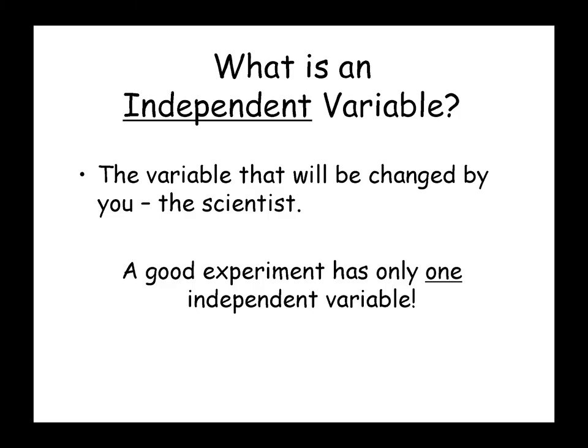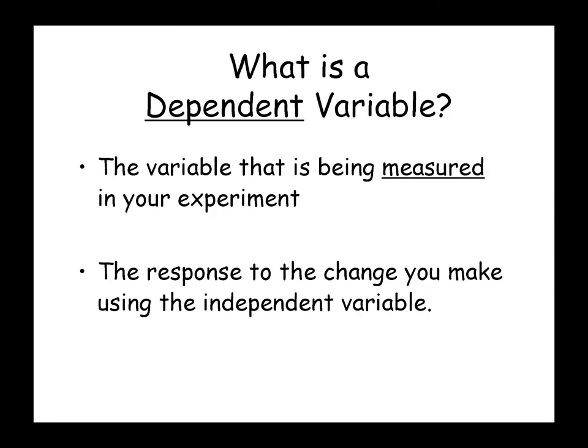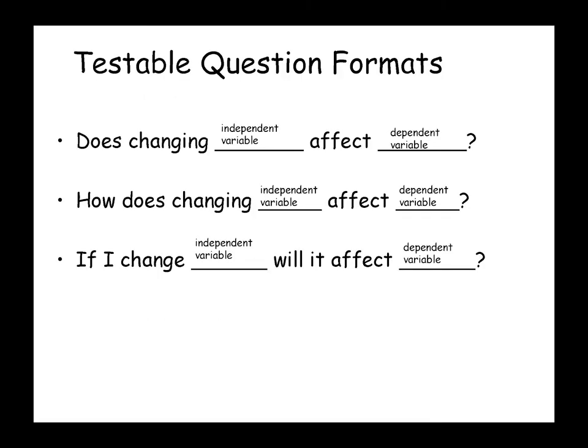What is an independent variable? It is the variable that will be changed by you, the scientist. A good experiment has only one independent variable. What is a dependent variable? It is the variable that is being measured in your experiment — the response to the change you make using the independent variable.